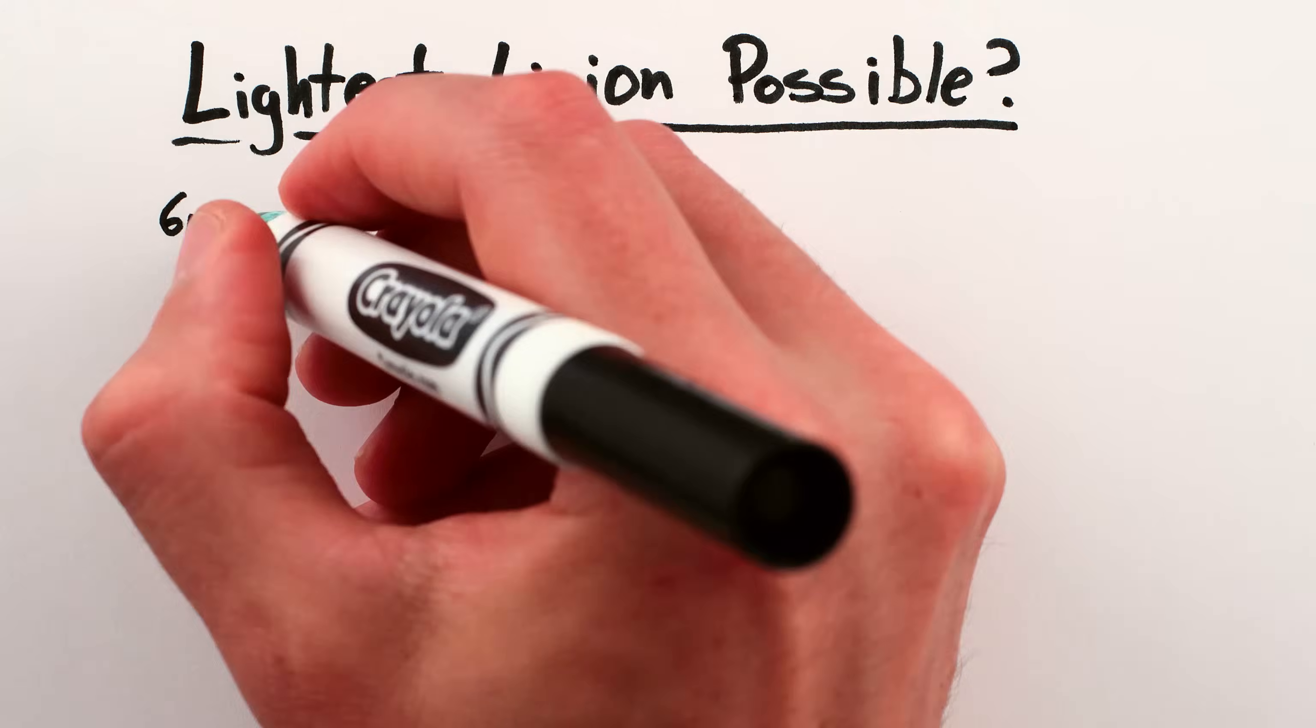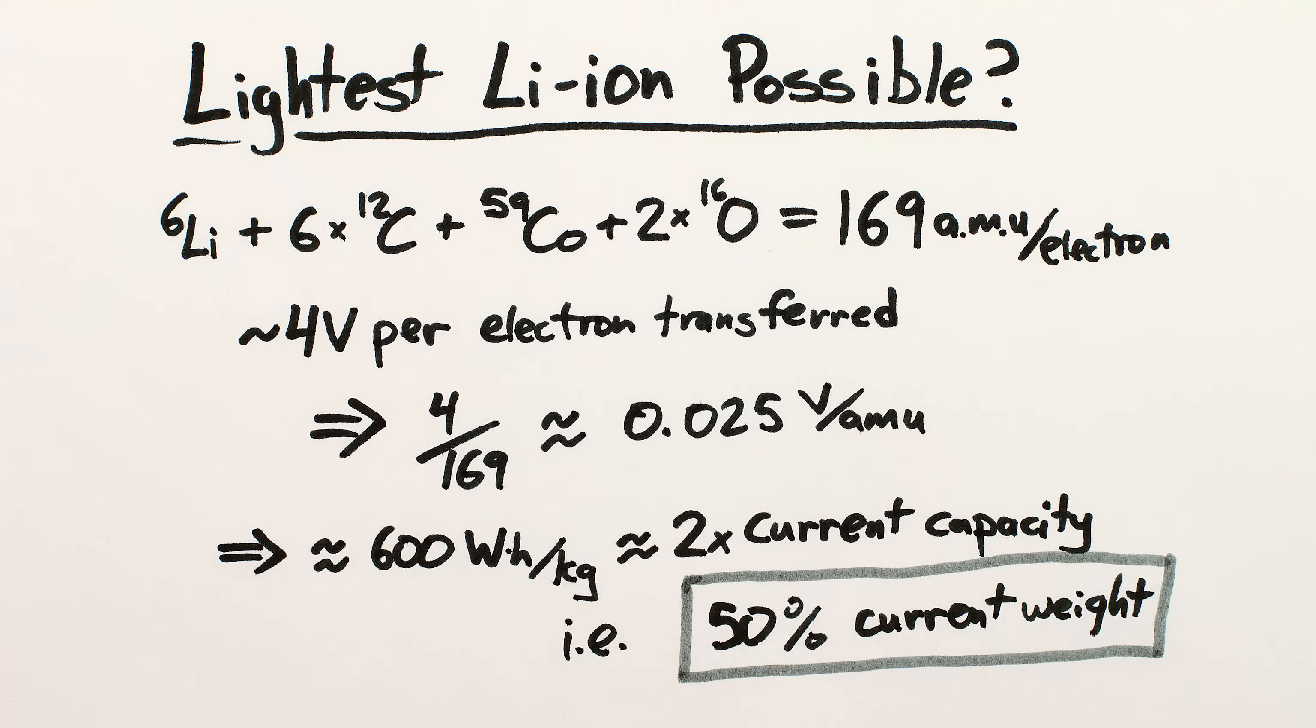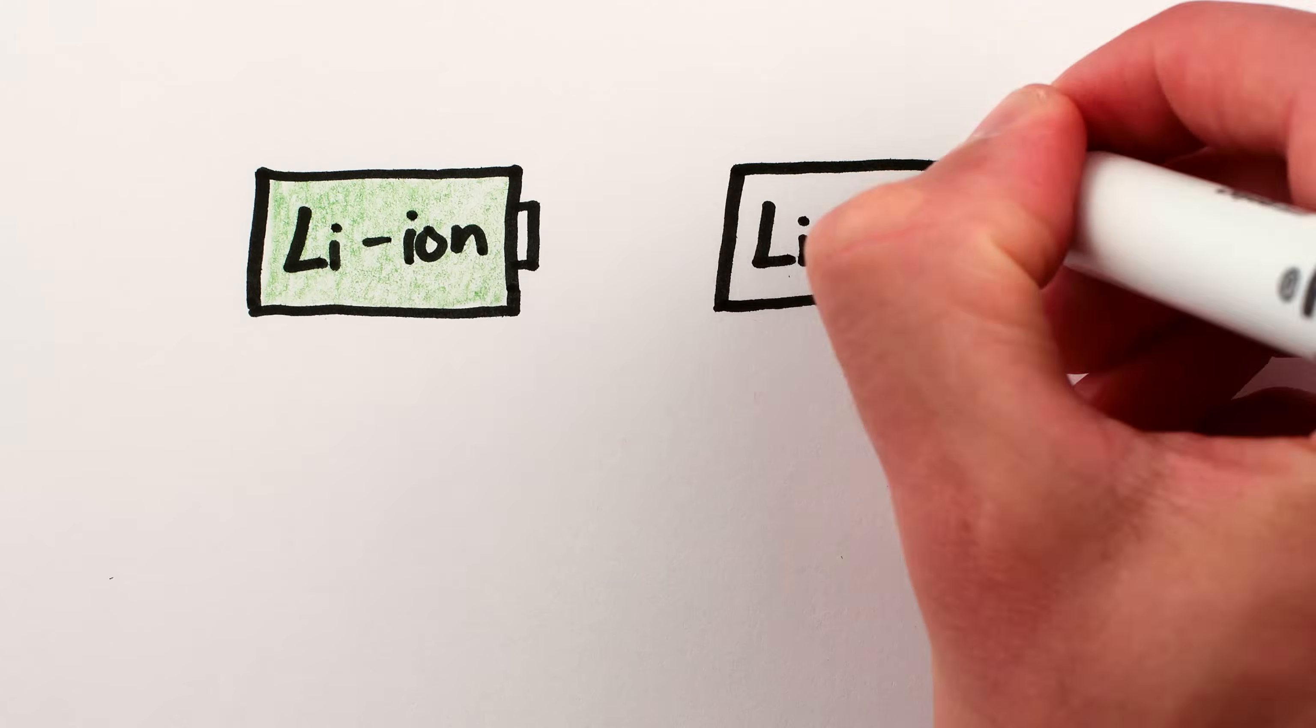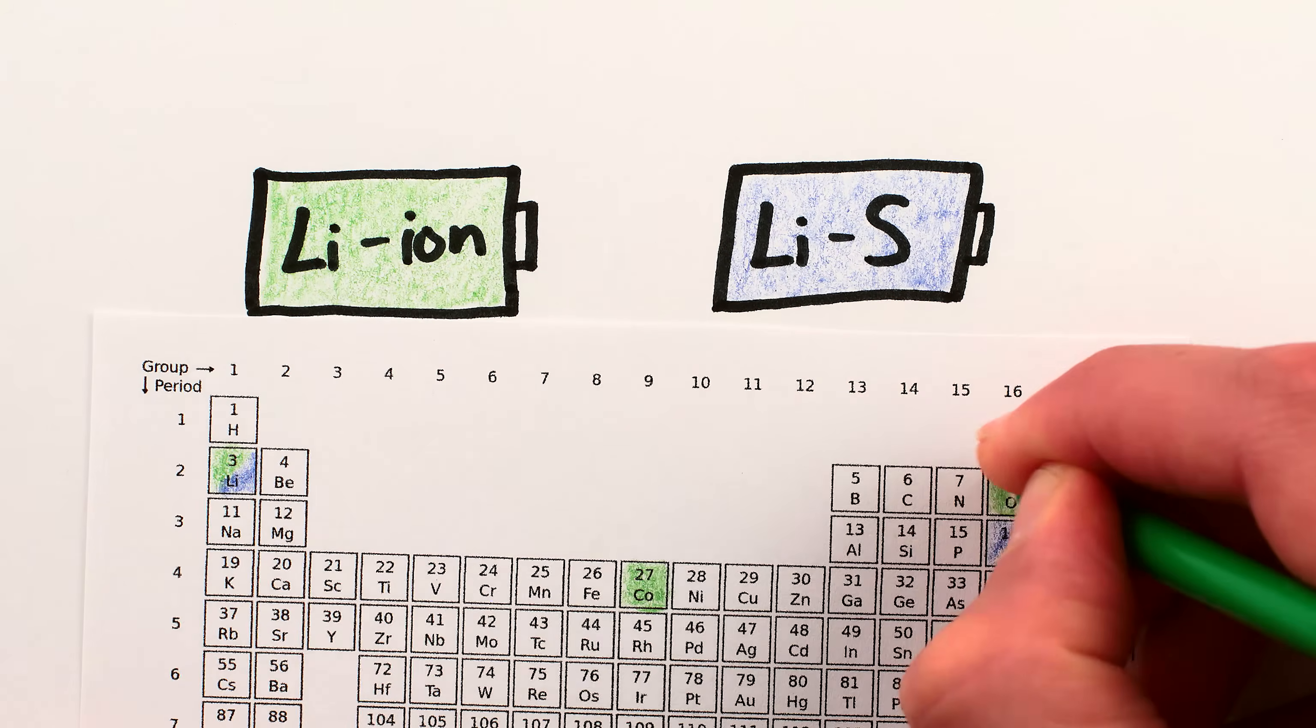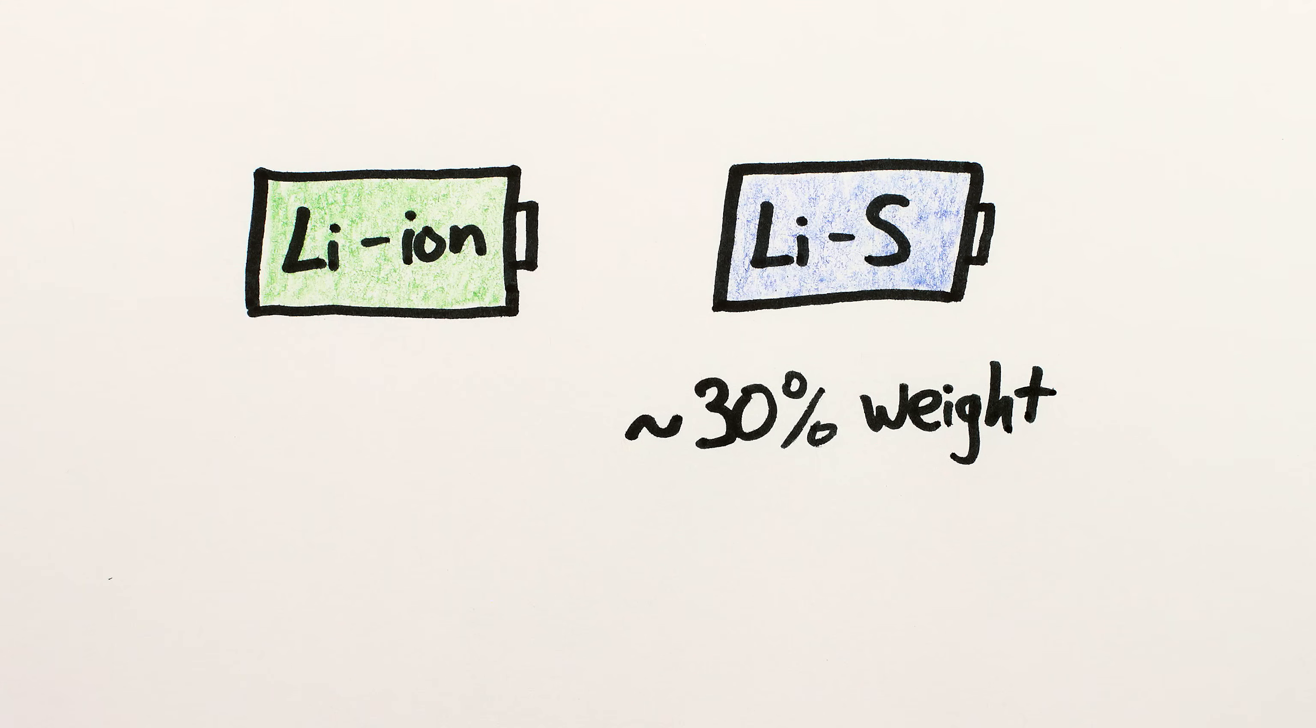So how much lighter will batteries get? Theoretical calculations put the minimum possible weight for lithium-ion batteries at around half what they currently are. A lighter candidate currently being developed is the lithium-sulfur battery, which has less energy per electron than lithium-ion batteries, but lithium and sulfur are lighter than lithium and cobalt oxygen and carbon, so a battery with equivalent capacity can in principle weigh around a third as much.